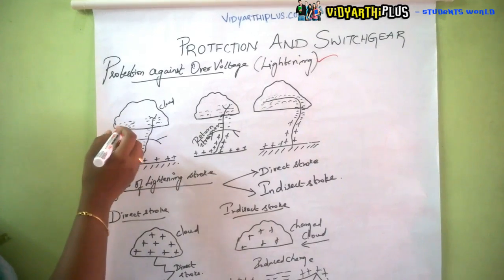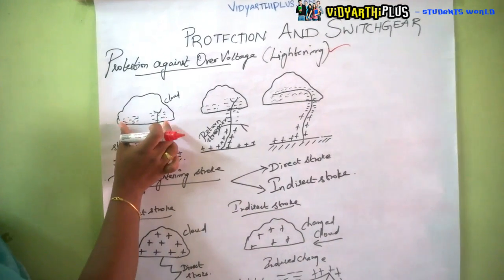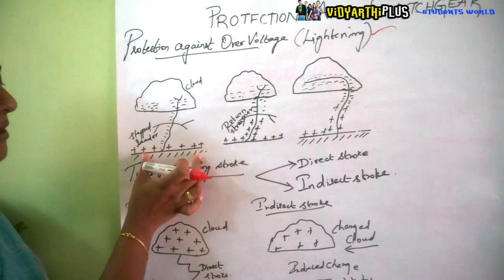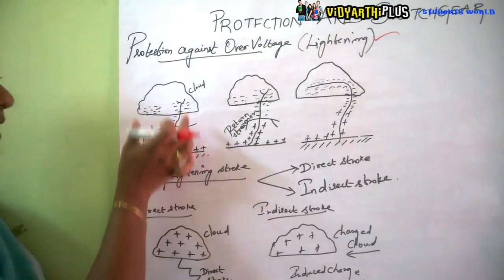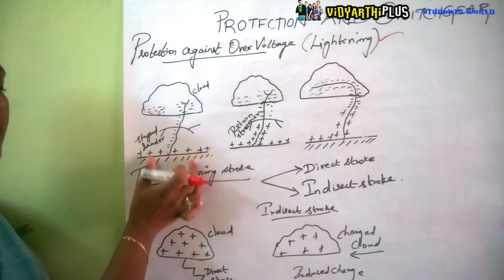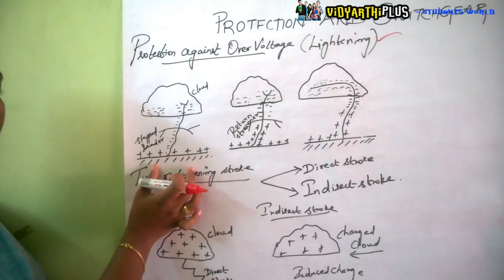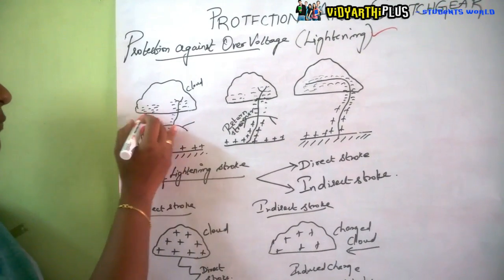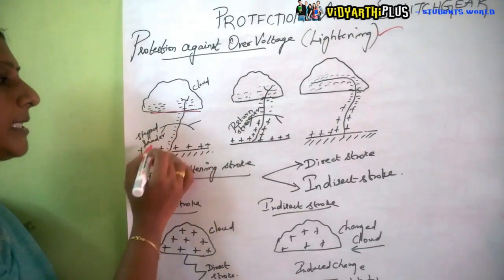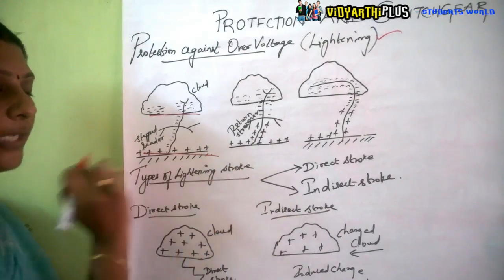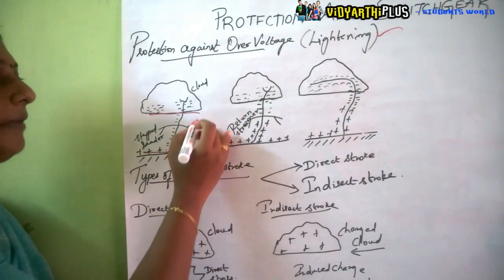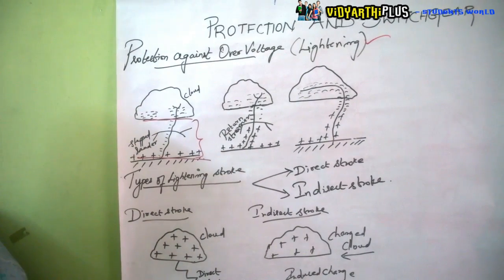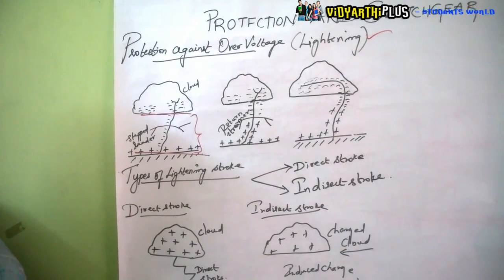Step by step: there is a cloud and below it is the earth, forming a capacitor — a parallel plate capacitor — where one plate is the cloud, the other plate is the earth, and air acts as the dielectric medium.